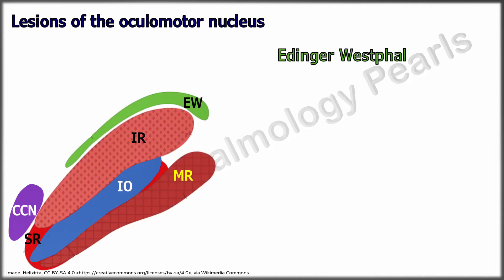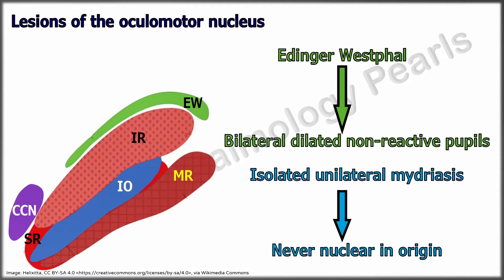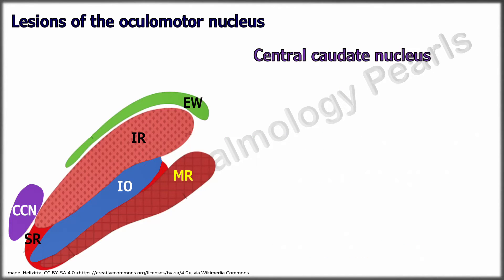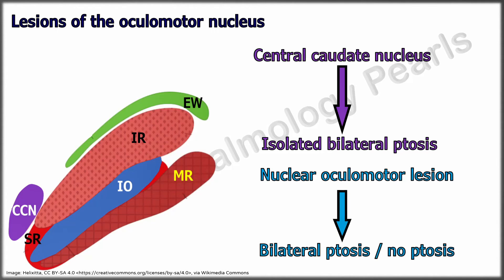Isolated lesions of the Edinger-Westphal nucleus are rare, as rostral mesencephalic lesions of the periaqueductal gray also result in ophthalmoparesis. However, if they do occur, bilateral dilated pupils with internal ophthalmoplegia result. It thus follows that an isolated unilateral mydriasis is almost never related to a nuclear oculomotor palsy. If the central caudal nucleus alone is involved, only bilateral ptosis is seen without any ophthalmoparesis. If it is spared, the other features of a nuclear oculomotor palsy without ptosis of either side will be present. Reiterating the dictum: in nuclear oculomotor lesions, either there is bilateral ptosis or no ptosis.